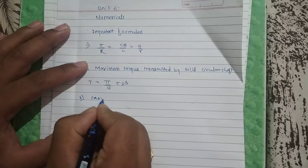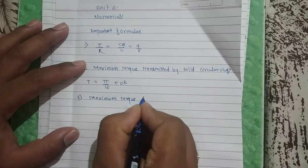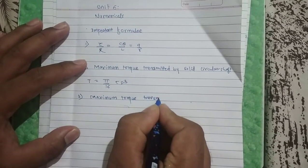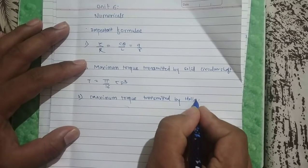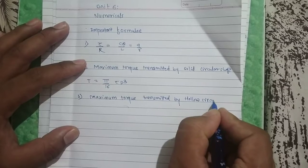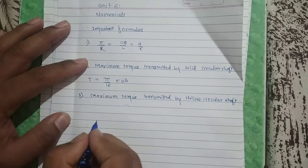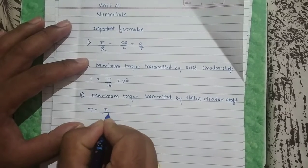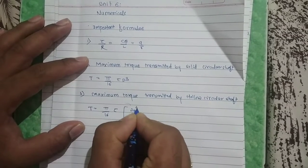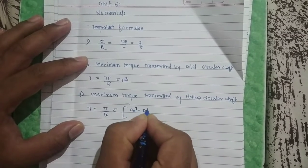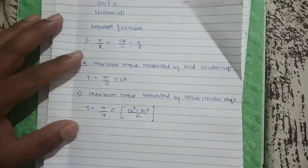Third: maximum torque transmitted by a hollow circular shaft. This is T is equal to π/16 into τ into (outer diameter raised to 4 minus inner diameter raised to 4) divided by outer diameter.